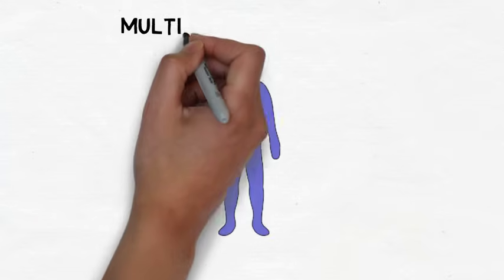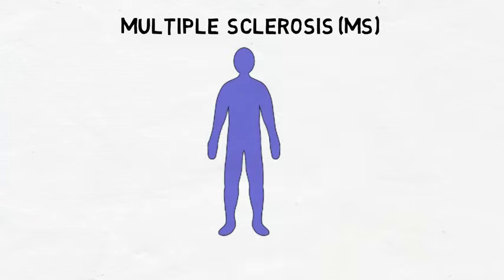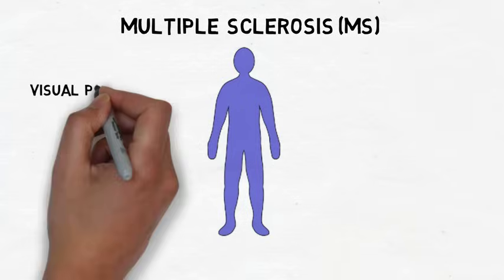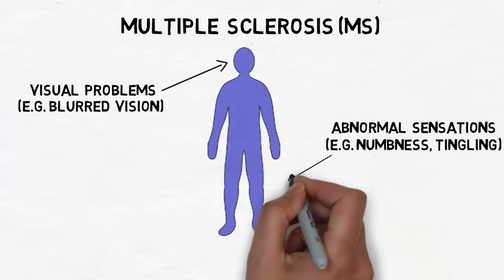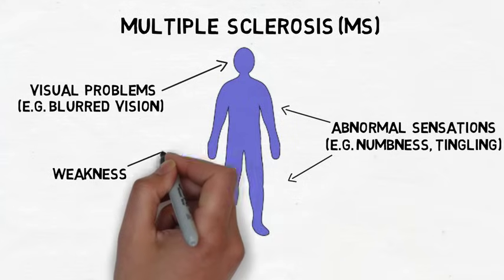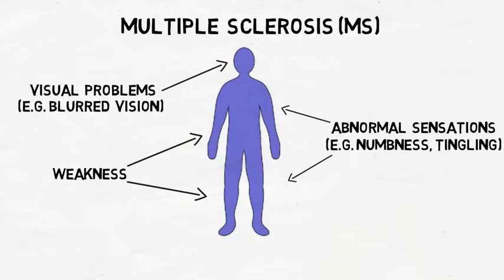Multiple sclerosis, or MS, is a central nervous system disorder that involves the abrupt appearance of neurological symptoms, which usually occur for the first time between the ages of 20 and 50. The symptoms of MS vary from person to person, and almost any nervous system function can be disrupted. The most common initial symptoms involve visual disturbances, abnormal sensations, and weakness. The causes of the disease are not fully understood, and are thought to involve genetic and environmental factors.